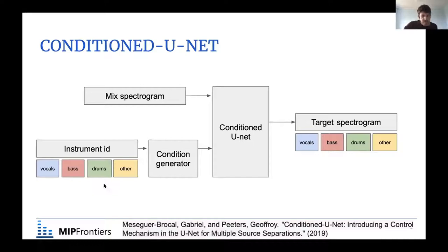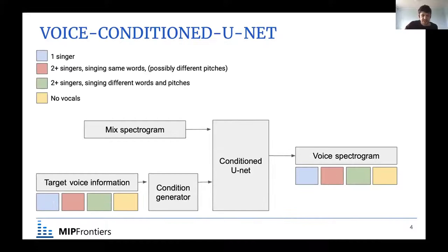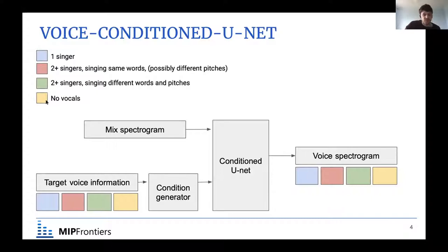We want to do the same thing, but instead of separating different instruments, we always want to separate vocals and differentiate between different cases of vocals. We defined four cases: one singer only; multiple singers singing the same words, sometimes at the same pitch, sometimes harmonies; multiple singers singing different words and different pitches simultaneously; and no vocals at all. We took the MuseDB dataset, the most used dataset for singing voice separation, cut it into segments of 4 to 11 seconds, and labelled each segment with one of these four cases.